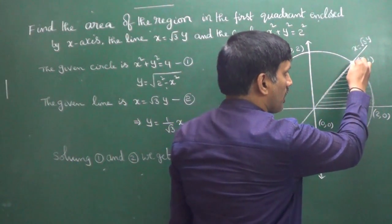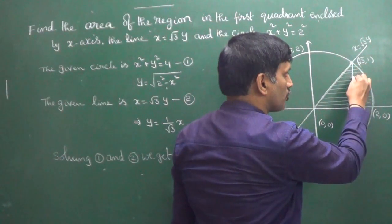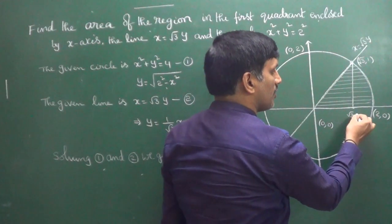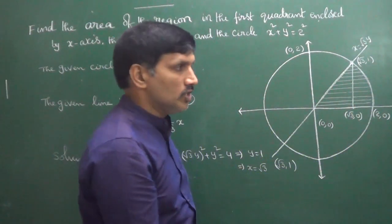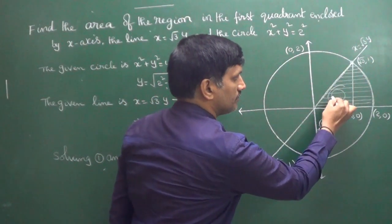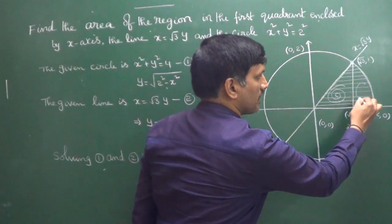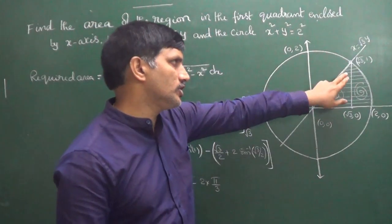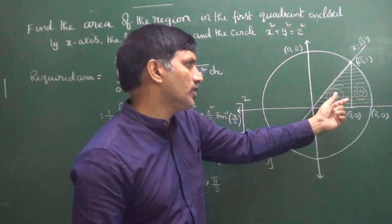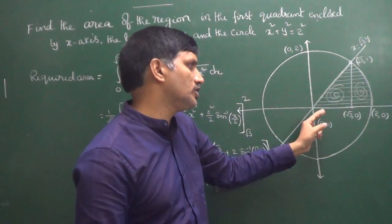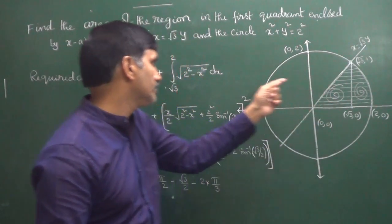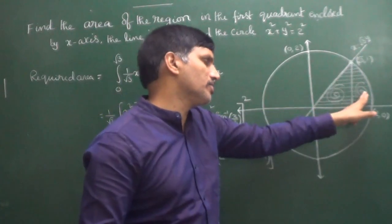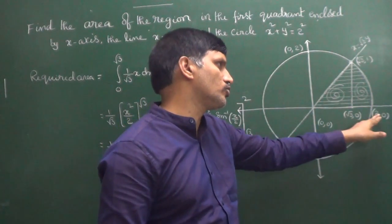From the intersection point (√3, 1), we draw a perpendicular line down to the x-axis, giving the point (√3, 0). The required area has two parts: from x = 0 to x = √3 under the line, and from x = √3 to x = 2 under the circle.